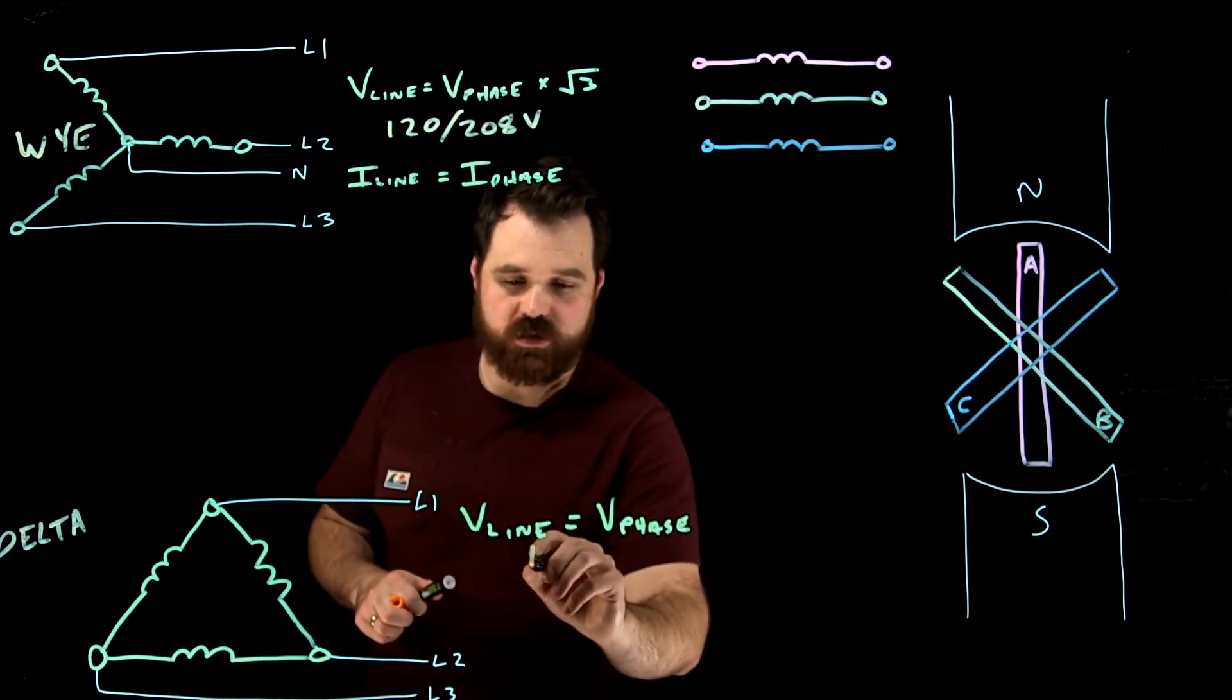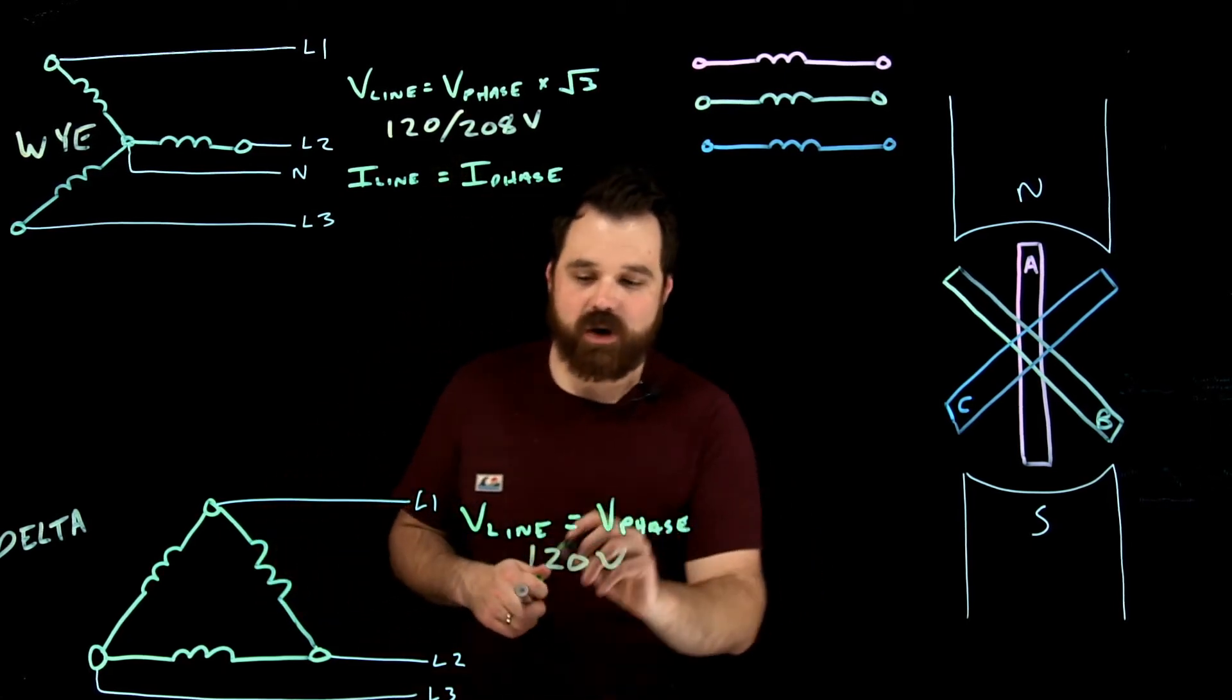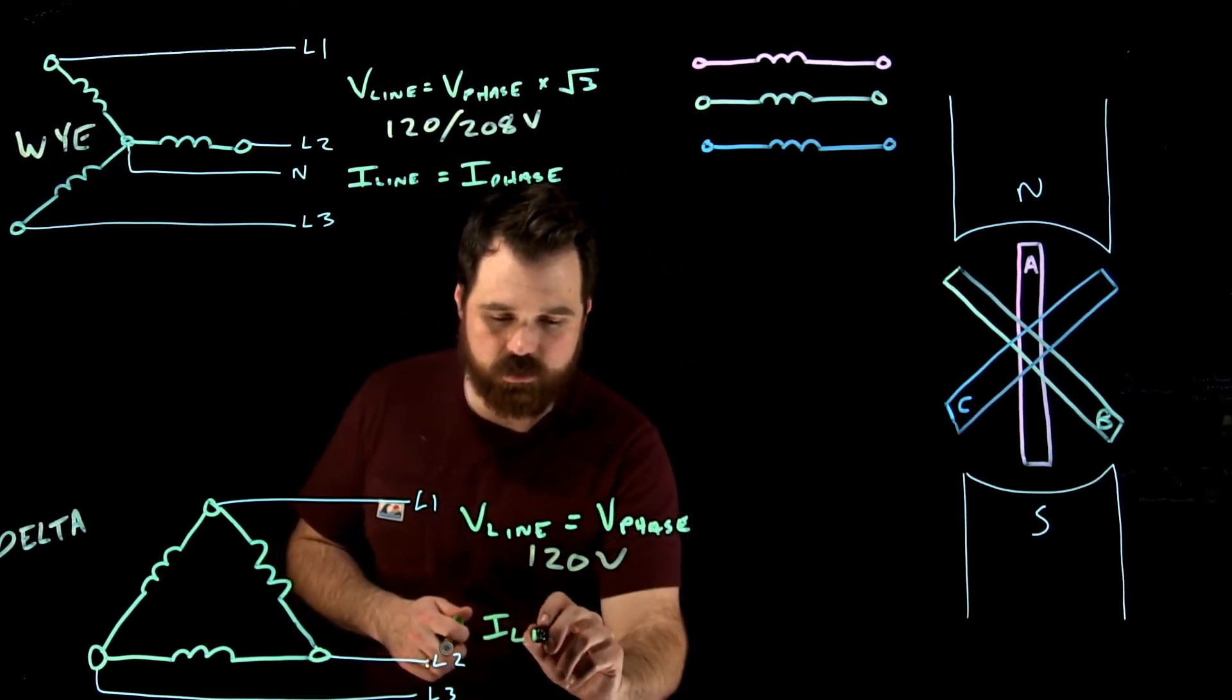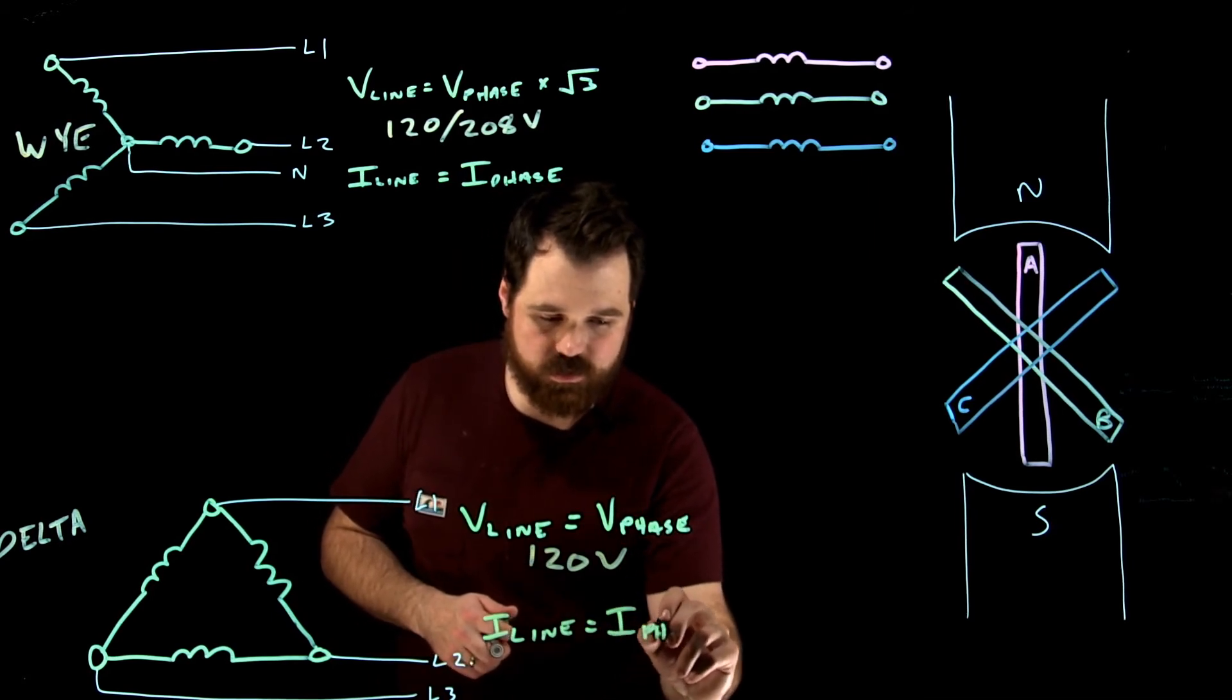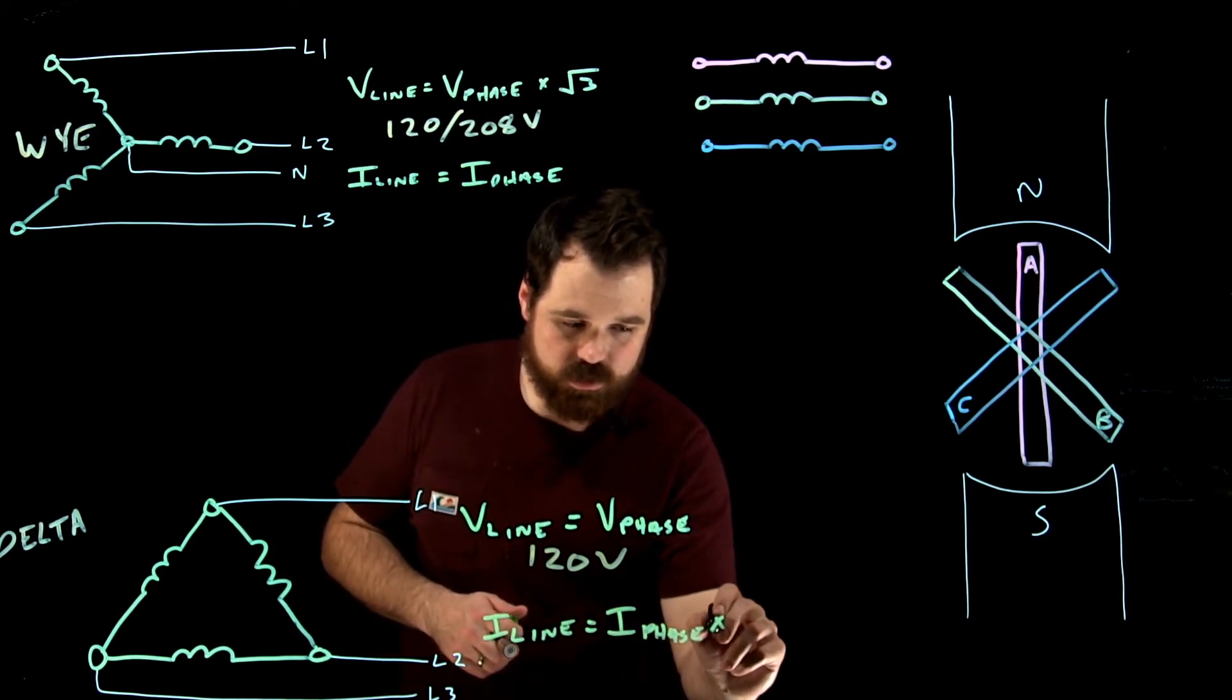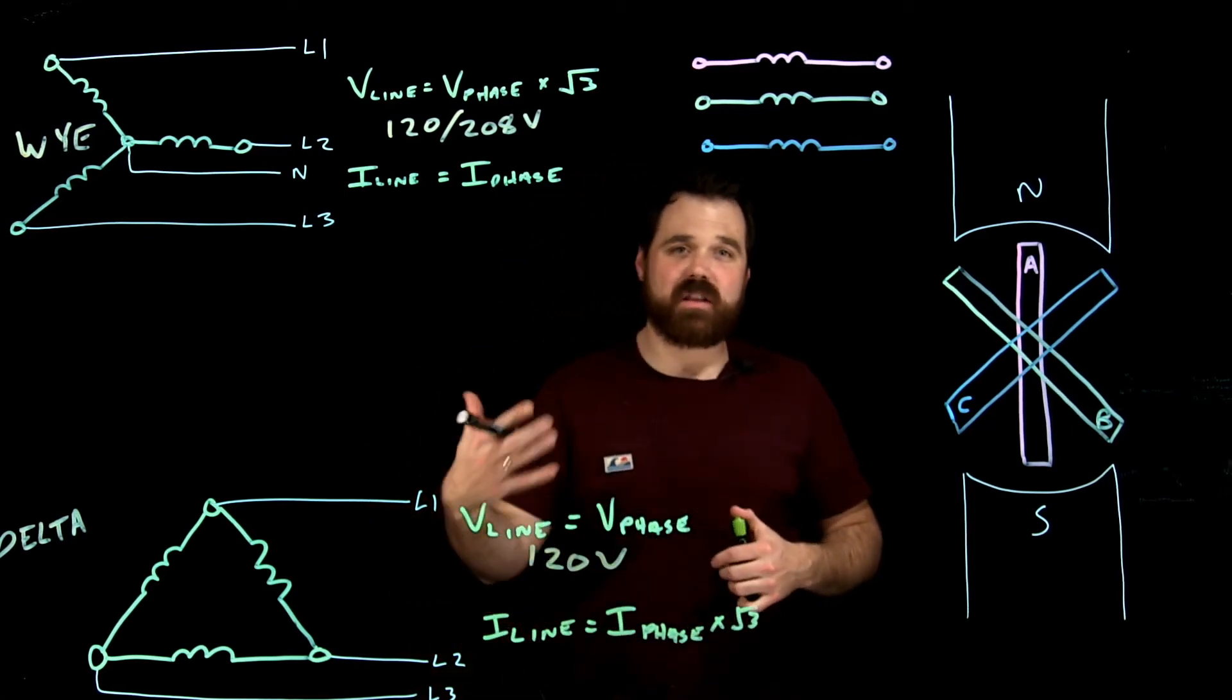So again, we'd have that 120 volts. But in this case, our I line would equal I phase times root three. So it allows us to see a higher line current.